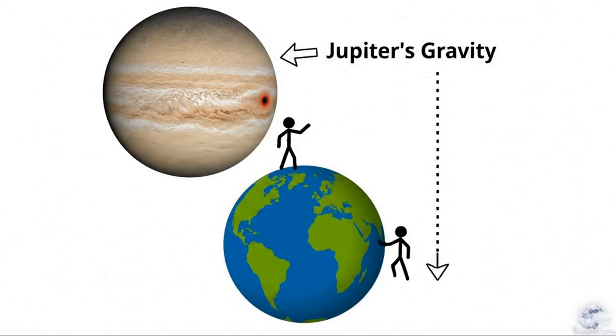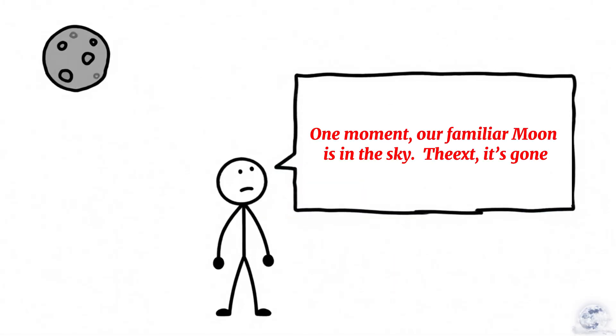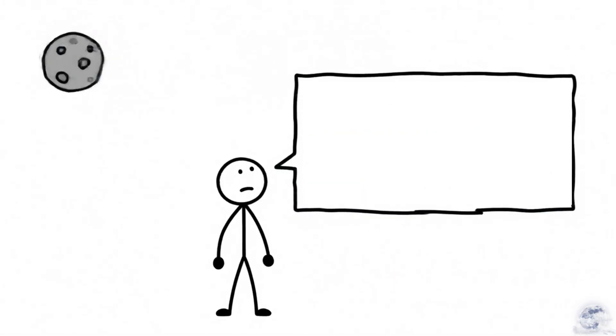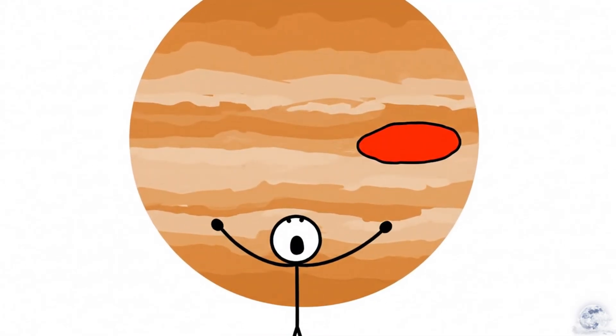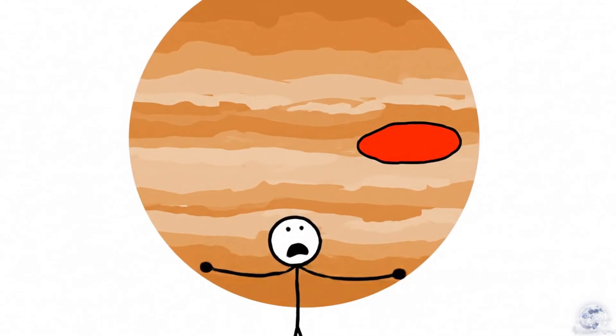Let's imagine it happens instantly. One moment, our familiar moon is in the sky. The next, it's gone. And a colossal, striped giant has taken its place. It would fill our sky, stretching from one horizon to the other.